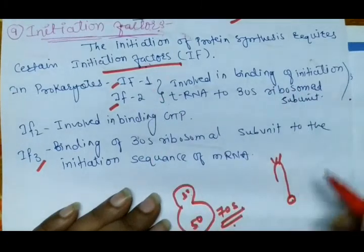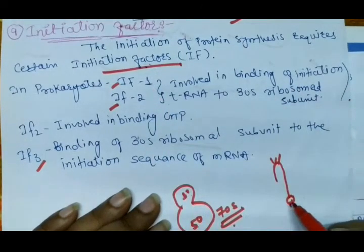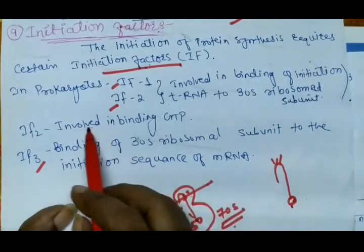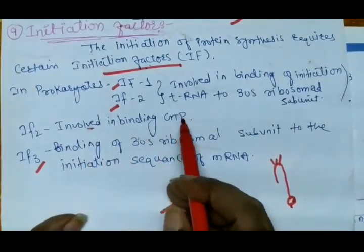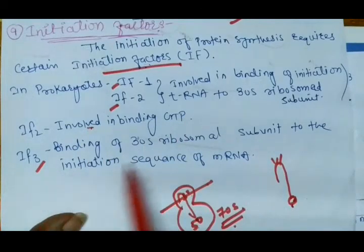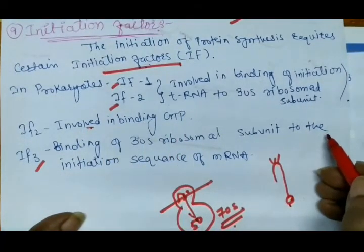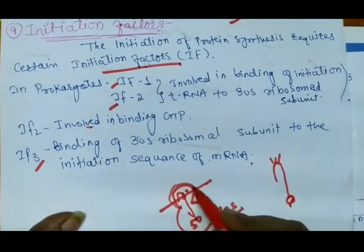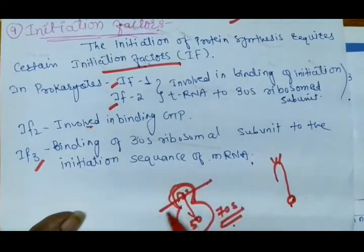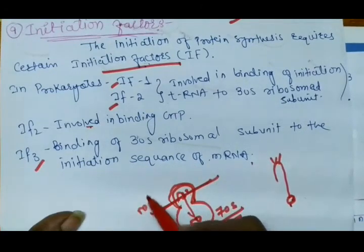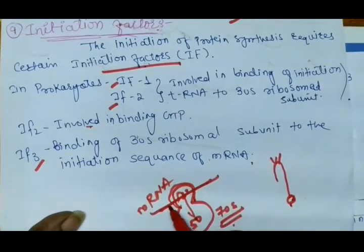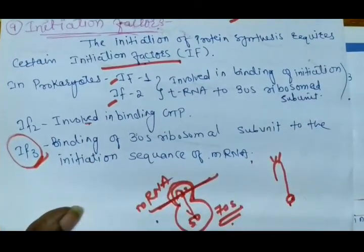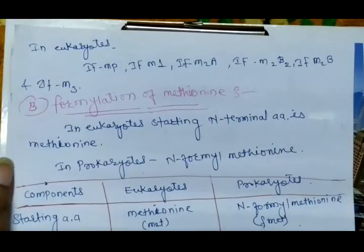IF1 and IF2 are involved in the binding of the initiation tRNA to the 30S ribosomal unit. IF2 is also involved in the binding of GTP. IF3 is involved in the binding of the 30S ribosomal subunit to the initiation sequence of the mRNA. Both get bound with the help of initiation factor IF3.